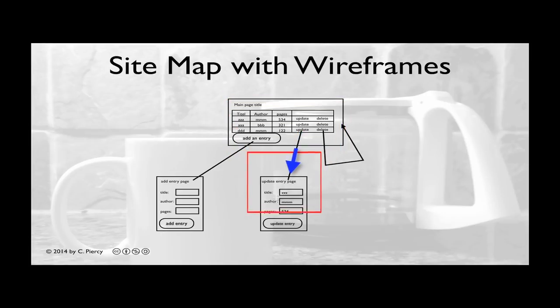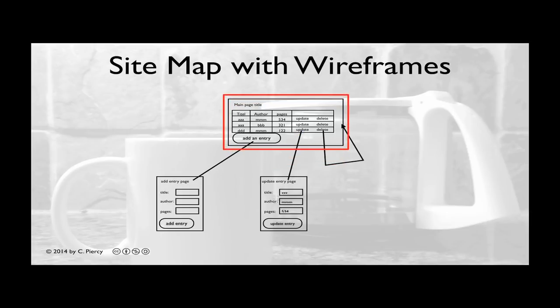The user clicks update. We'll see a similar page, but the update entry will include the current data from the record that was selected. The user can then edit these items, hit update entry, and then we should go back to the main page with the values updated in the table. Finally, if the user clicks on the delete button or link, they will be brought back to the main page, except the table will now not include the row that they selected delete from.